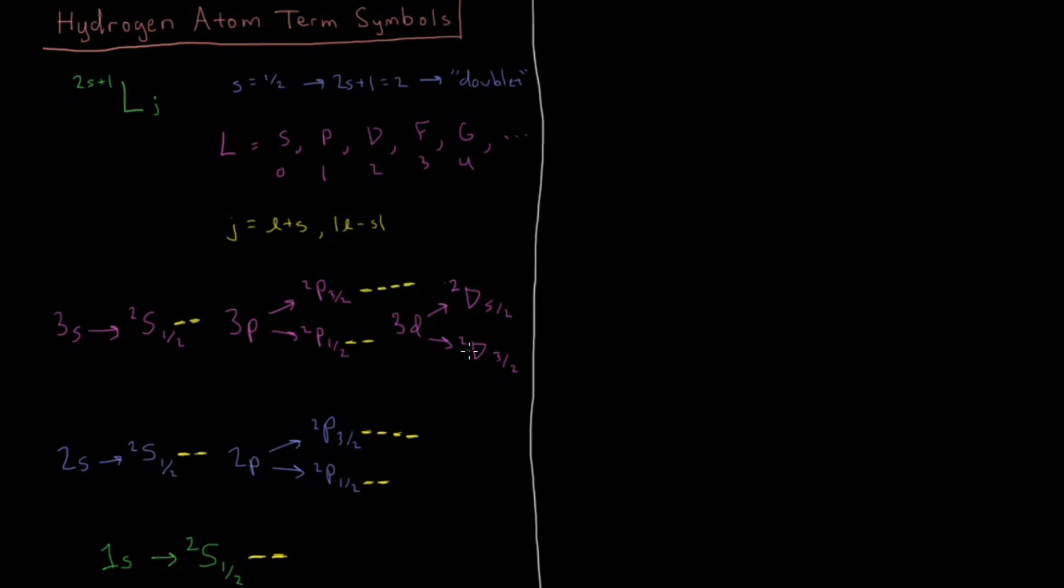Then for the 3D, showing the concept of M sub J, it has values of 3 halves, 1 half, minus 1 half, minus 3 halves. And for J equals 5 halves, we can have M sub J equals 5 halves, 3 halves, 1 half, minus 1 half, minus 3 halves, and minus 5 halves. Six possible values there.